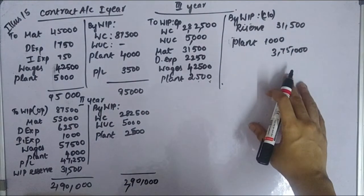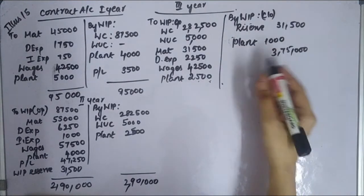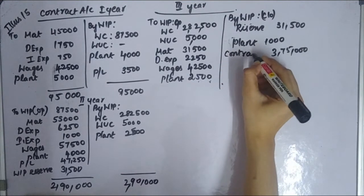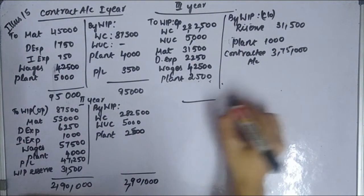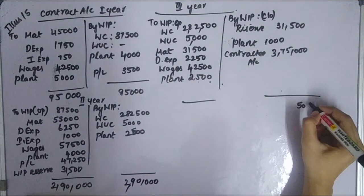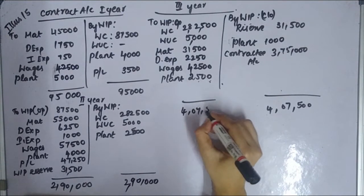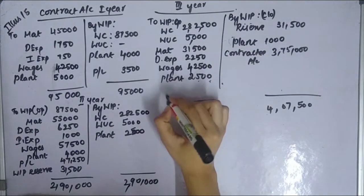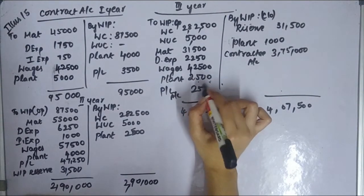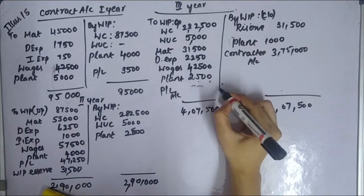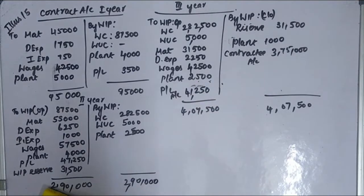The contract value is Rs. 3,75,000. After corrections, the profit transferred to P&L is Rs. 41,250. This is the profit of the P&L account for year 3.